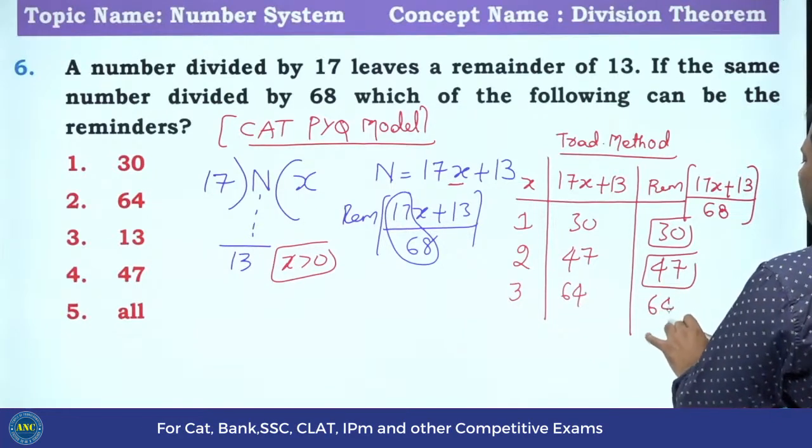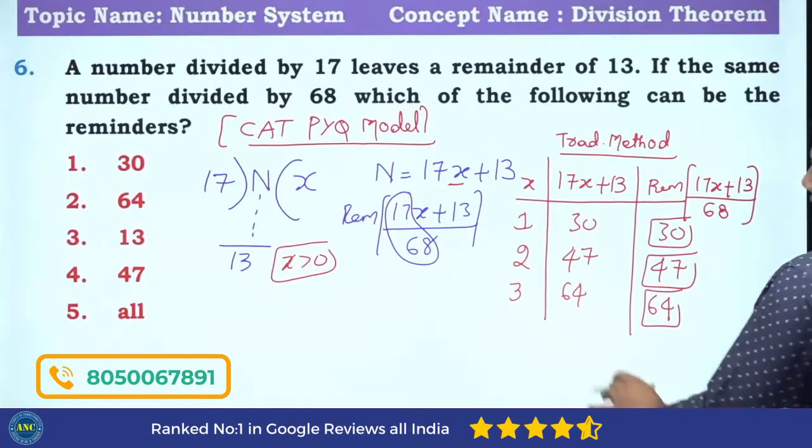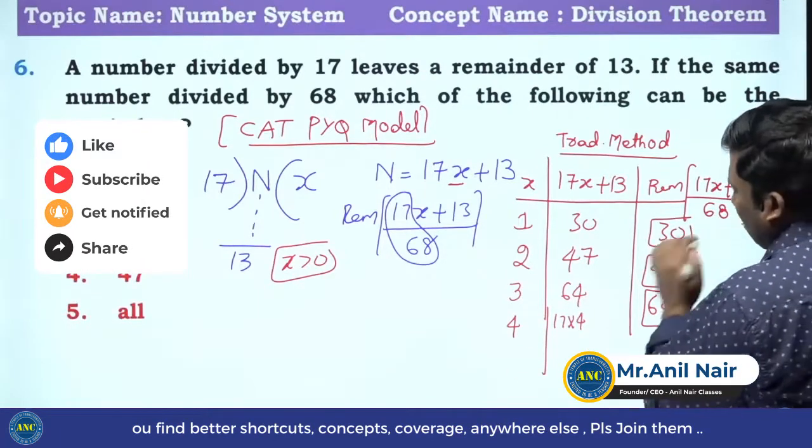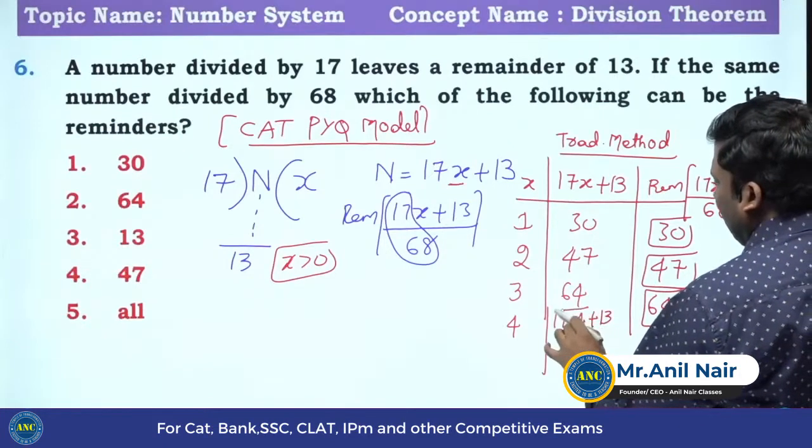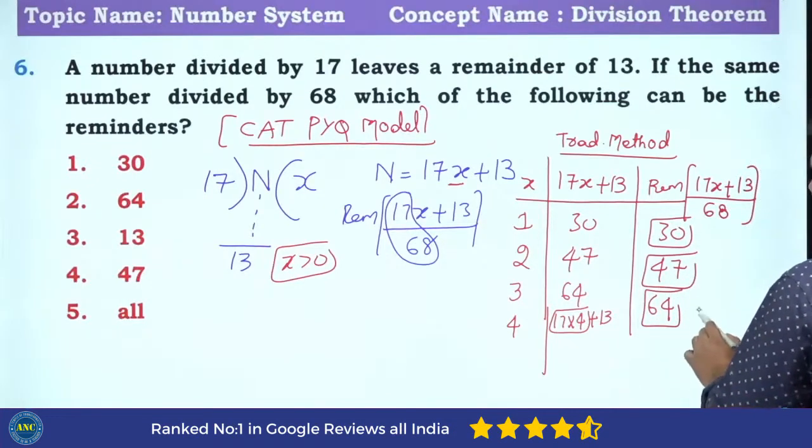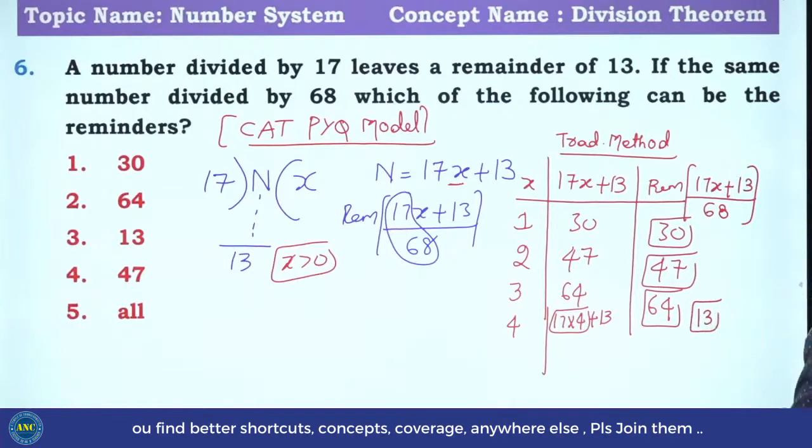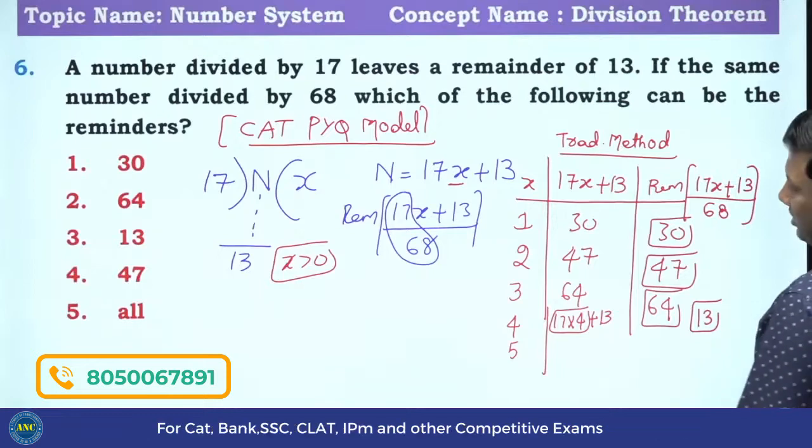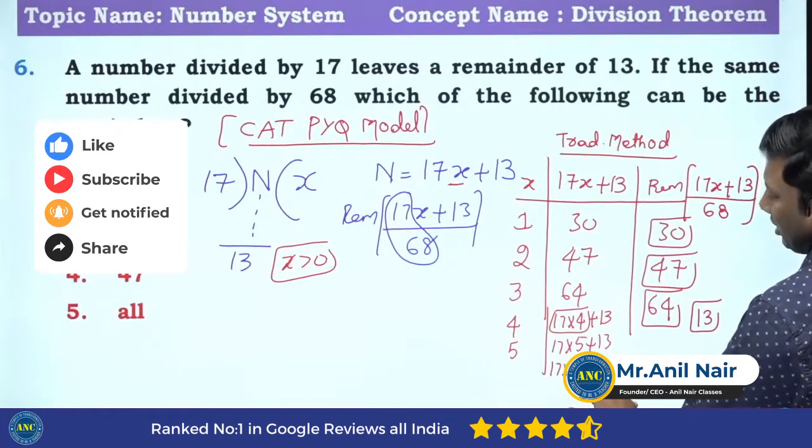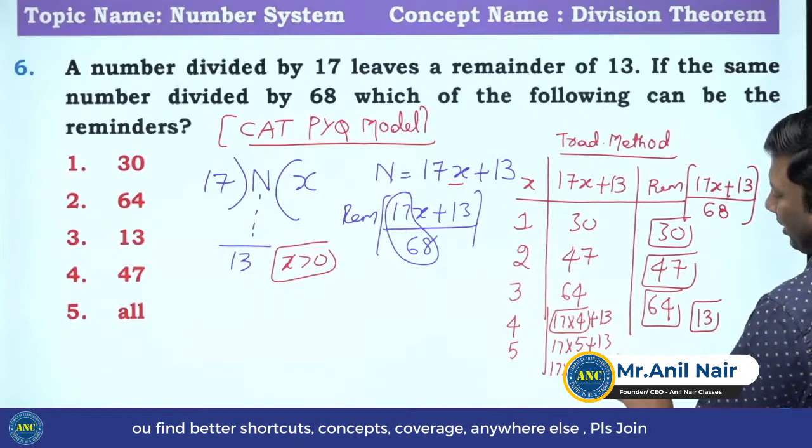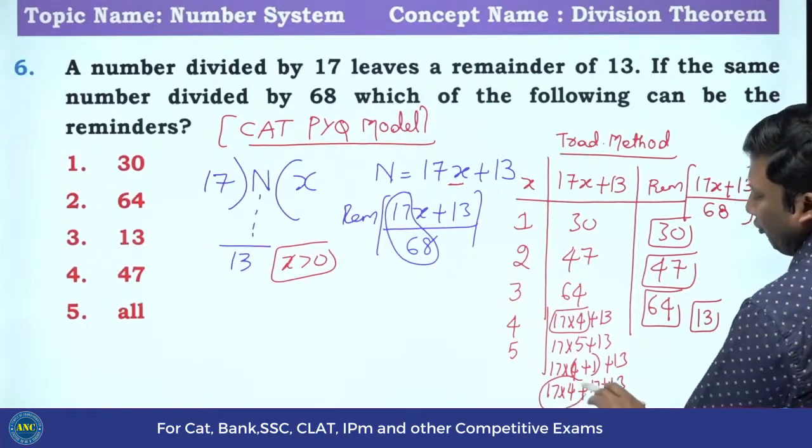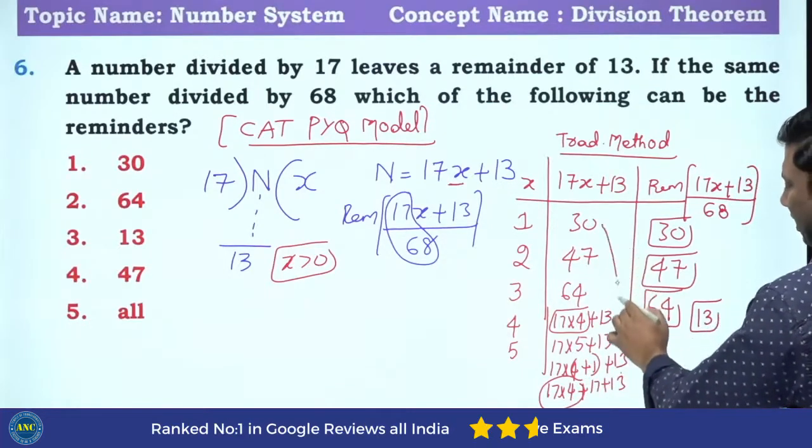64 divided by 68. Answer is 4. If X is 4, 17 into 4 plus 13 equals 68. It is perfectly divided by 68. What is the remainder? 13. It is 13. If it is 5, listen carefully sir. If it is 5, this is 17 into 5 plus 13. It can be written as 17 into 4 plus 1 plus 13, which is 17 into 4 plus 17 plus 13. 17 times 4 is 68, 17 plus 13 is 13.